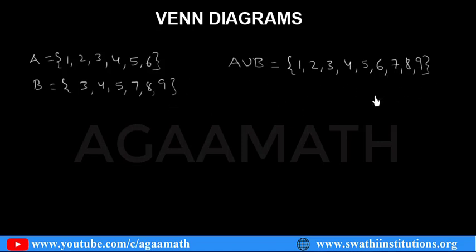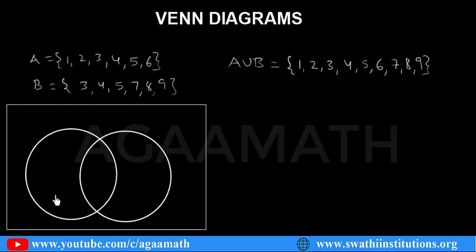Now if you would like to represent this in the Venn Diagram — Venn Diagrams are represented using shapes called circles or oval shapes. In general we use a circle shape. Here I use two circles and one rectangular box. The rectangular box indicates the universal set, that is mu. This is the universal set, and these are the two sets — one is A and one is B.